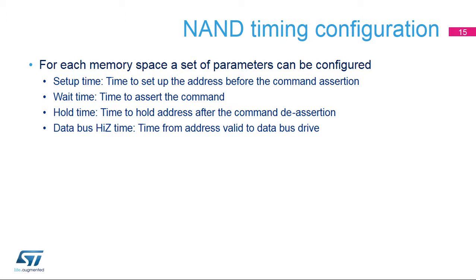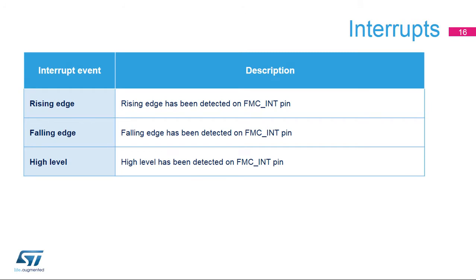Each common and attribute memory space can be configured with different timings for the NAND Flash's command, address write, and data read-write accesses. The attribute memory space is used for the last address write access if the timing must differ from previous accesses in case of ready-busy management; otherwise, only common space is needed. Four parameters define the number of HCLK cycles for the different phases: setup time, wait time, hold time, and data bus high-Z time. The NAND controller offers three interrupt sources — rising edge, falling edge, and high-level detection on the FSMC INT pin when connected to the ready/busy signal.